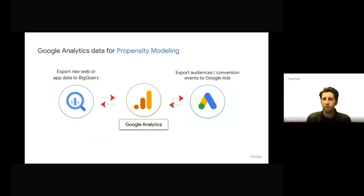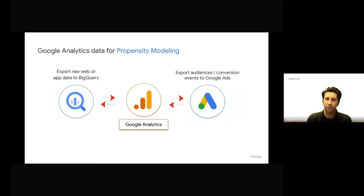One of the most accessible datasets to get you going on propensity modeling is Google Analytics data. Google Analytics measures your customer's journey across your app and web properties. This customer journey data is rich, full of fascinating details that can be easily exported to BigQuery, analyzed, and modeled to make predictions about future interactions.